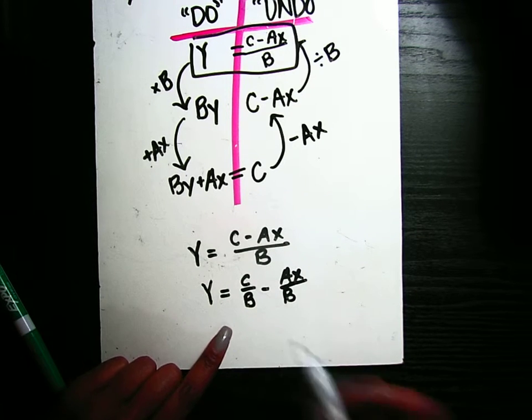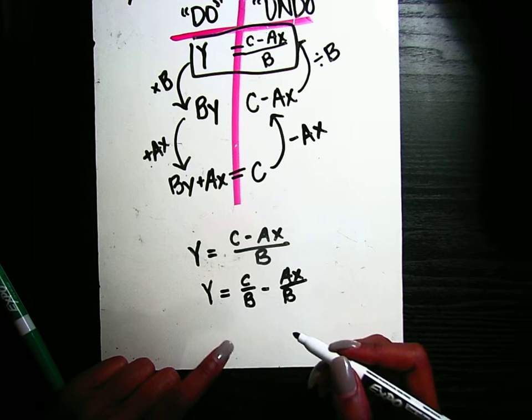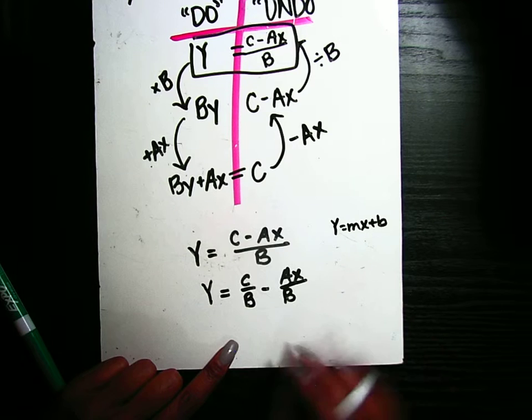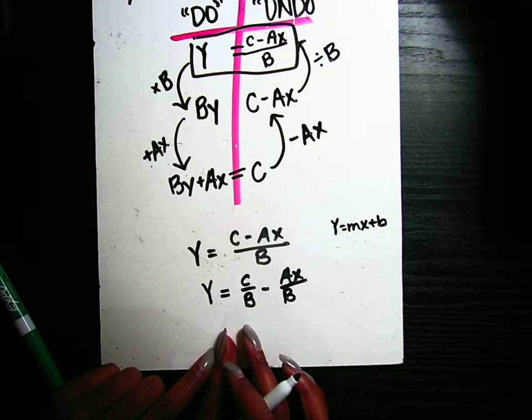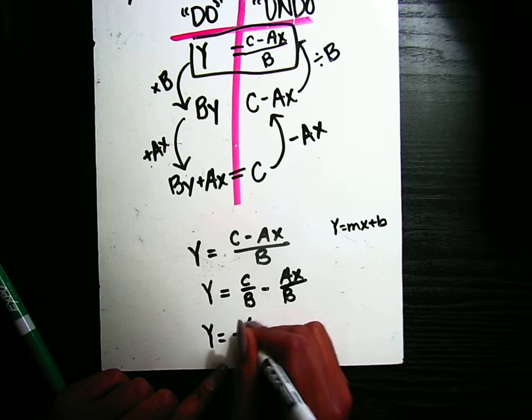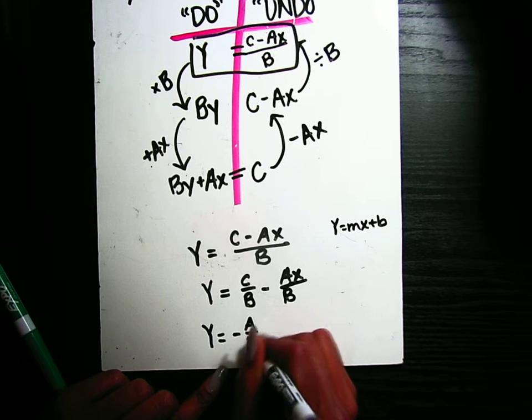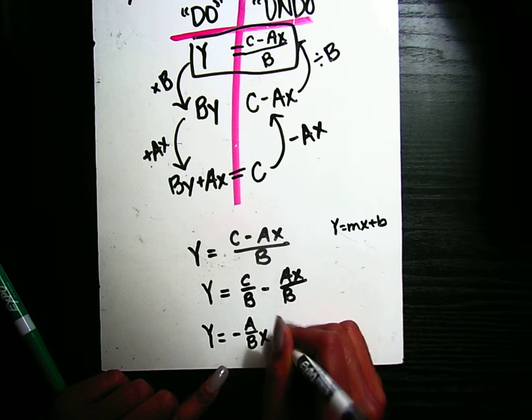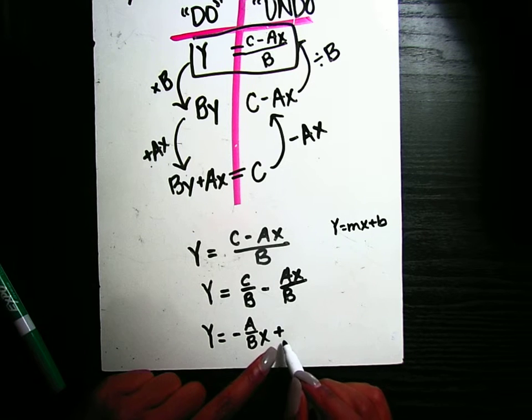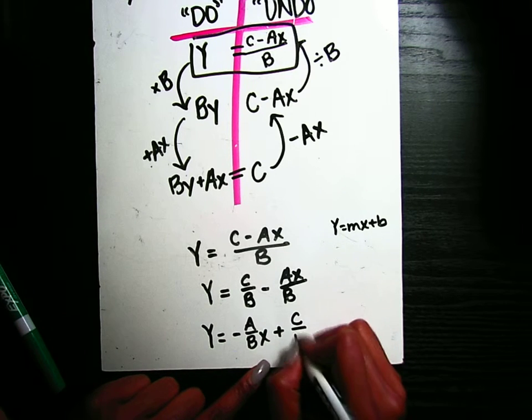And now what I'm going to do, mind you, we always write it Y equals MX plus B. I want my MX term to be in the front. So I'm going to rewrite that as Y equals negative A over BX plus C over B. It's a plus because C over B is positive here, so it's going to stay positive here.